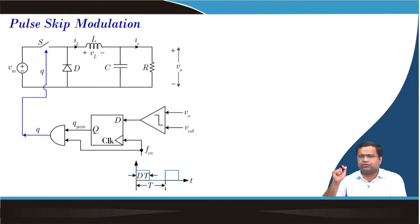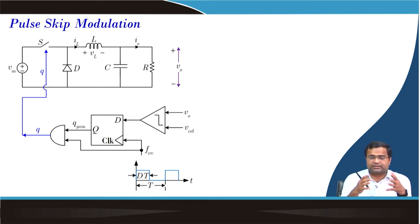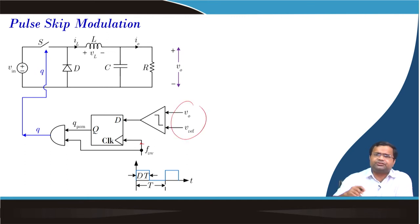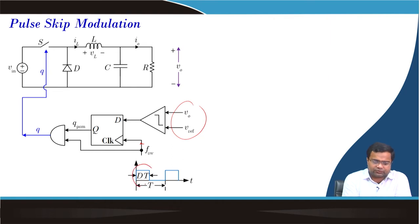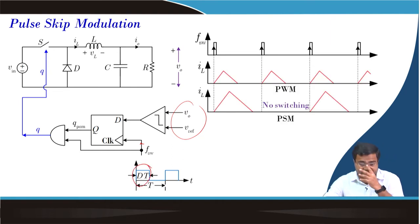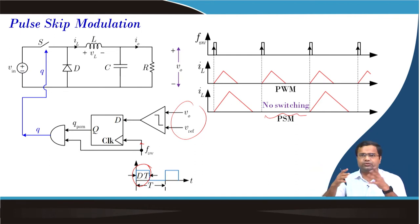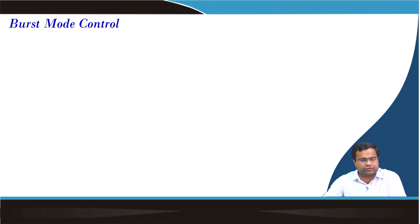Pulse skipping modulation has also been discussed, including its digital implementation. In the analog case, at the clock edge the signal compares: if V0 is greater than VREF, the pulse is skipped; otherwise the pulse width is passed through. As load current decreases, for a given duty ratio the number of skip cycles increases, the time period increases, and the switching frequency decreases.